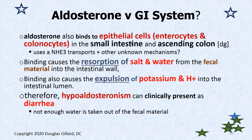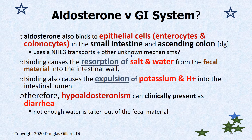Aldosterone binds to epithelial cells, specifically enterocytes and colonocytes, in the small intestine and ascending colon — some research shows other parts of the colon as well, but Guyton just shows the ascending colon. It uses a NHE3 transporter, and there's another mechanism not yet completely understood. The binding causes the reabsorption of salt and water from the fecal material and triggers the trade for potassium and hydrogen.